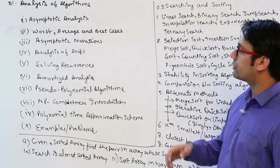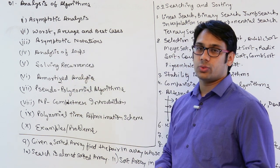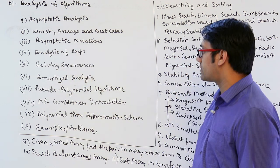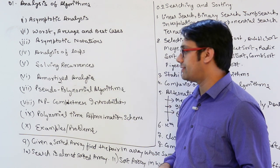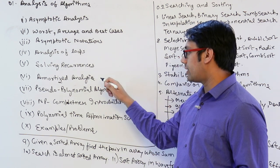In analysis of algorithms, we are going to study asymptotic analysis, worst case, best case, and average case complexities. Then analysis of loops, how to solve recurrence relations, and amortized analysis.